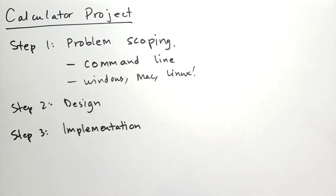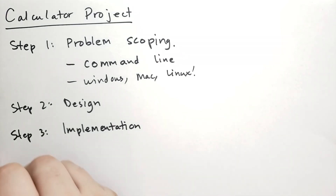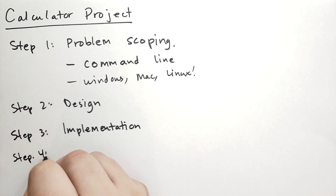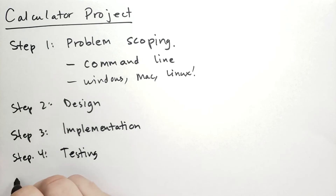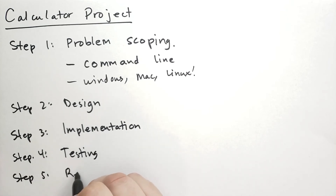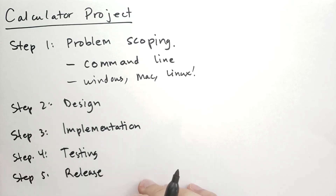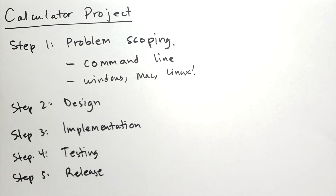After we get close to a design, we'll take step three and start working on the implementation. The first phase of implementation is getting a prototype, and the second phase will be to polish that prototype and get everything implemented properly. As that happens, we'll move into step four, which is testing. And then finally, step five, we will release this software — our release is just going to be in the form of a GitHub repo. We're not going to sell the software or put it on a website.